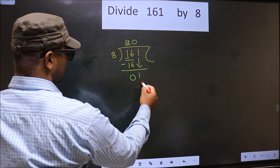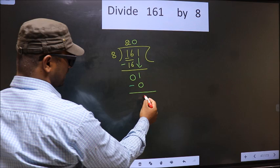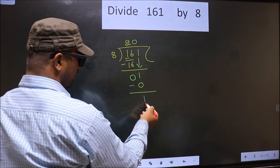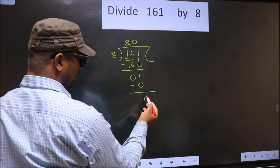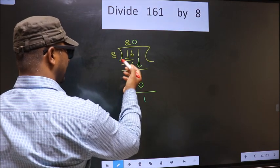So 8 into 0 is 0. Now you subtract. 1 minus 0 is 1. Over here we did not bring any number down, and 1 is smaller than 8.